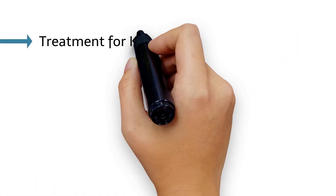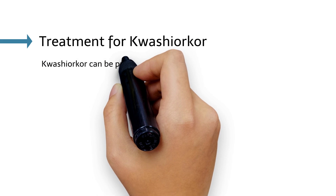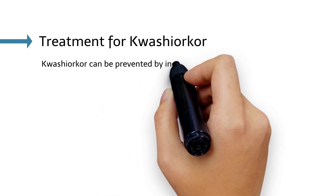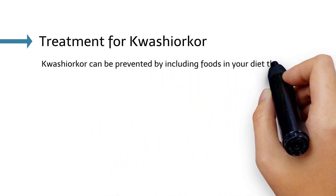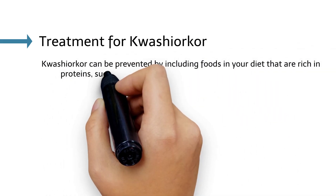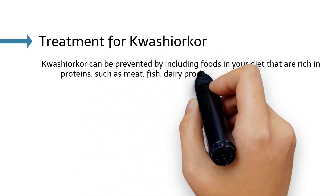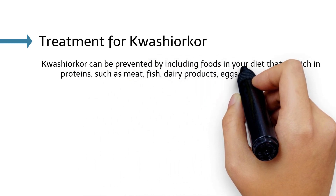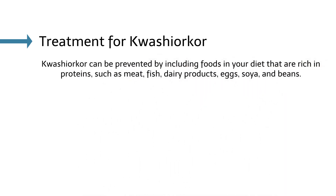Children display a dull, sluggish attitude. Treatment for Kwashiorkor: it can be prevented by including foods rich in protein in the diet, such as meat, fish, dairy products, eggs, soy, and beans.